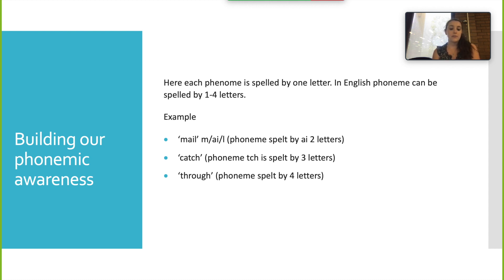In English phoneme can be spelled by one to four letters. So I've got an example there, male. The phoneme can be spelled by two letters: M-A-L. Catch: C-A-T-C-H. Through: T-H-R-O-U-G-H.